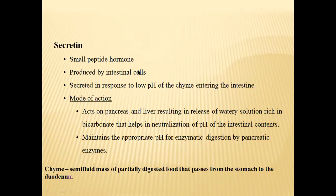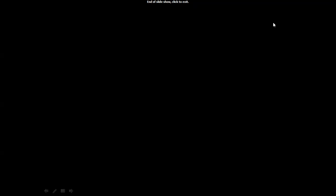Chyme is a semi-fluid mass of partially digested food that passes from the stomach into the duodenum. This chyme is in an acidic condition, and its entry triggers the small intestine to release secretin. Secretin acts on the liver and pancreas to release more watery content juice, increasing the pH and creating the optimum environment for pancreatic enzyme action. With the help of secretin and cholecystokinin hormones, all the juices are released in appropriate times and quantities, and with the help of enzymes and bile salts, the lipids are digested. In the next class, we will meet with another topic. Thank you.